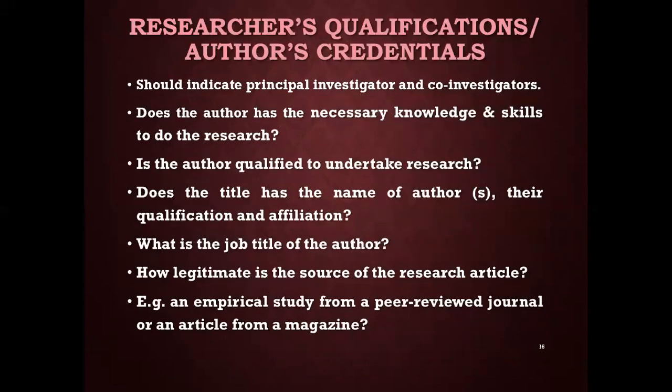Researcher's qualifications or author's credentials: who conducted the research, including their job titles and qualifications. It should indicate the principal investigator and co-investigators. Does the author have the necessary knowledge and skills to do the research? Does the title include the author's name, qualifications, and affiliations? How legitimate is the source — for example, an empirical study from a peer-reviewed journal is more legitimate than an article from a magazine.